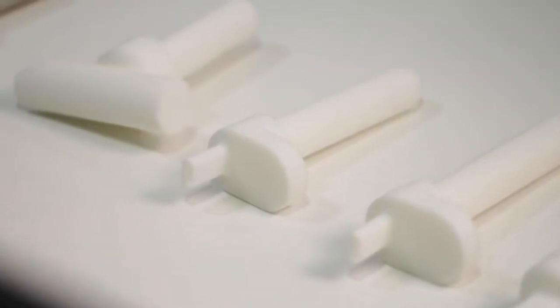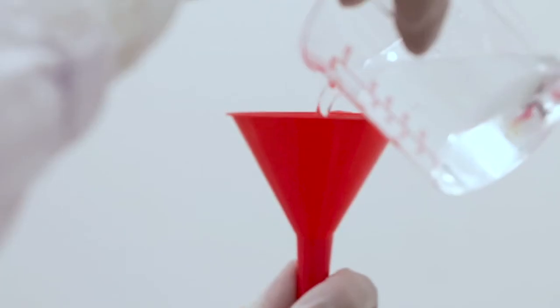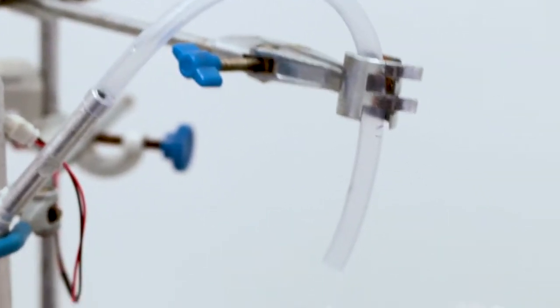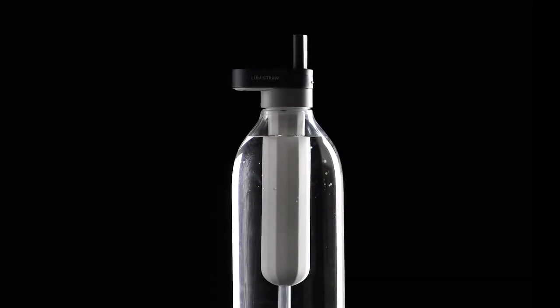After experimenting with a ton of materials, we chose Teflon for its ability to reflect twice as many UVC rays, cutting the time needed to purify water. Combining smart engineering and flow management, we created the world's first Teflon flow cell that purifies water faster than you can sip.